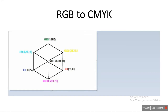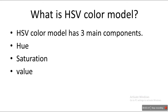Now what does this CMYK model have to do with our HSV model? So we'll look at it. What is the HSV color model? The HSV color model has three main components: hue, saturation, and value. We'll look at each component separately.